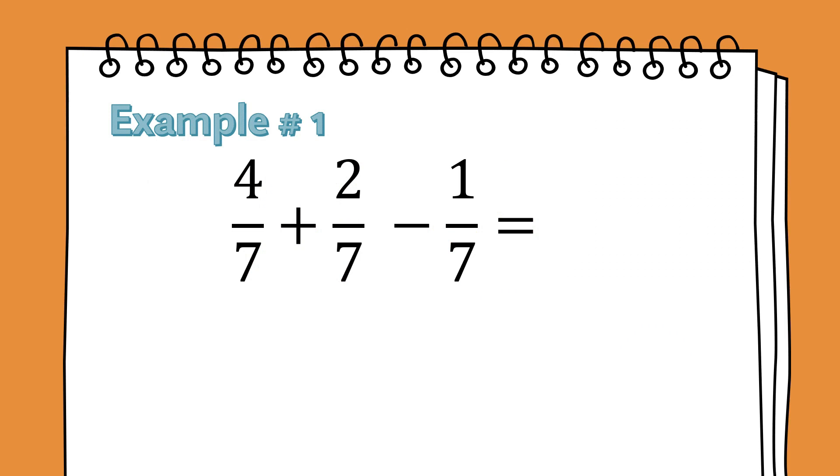For example number 1, we have here 4/7 plus 2/7 minus 1/7. If we are going to solve a fraction with a combination of two different operations, just like here we have addition and subtraction, we need to solve first the first pair which is 4/7 plus 2/7.